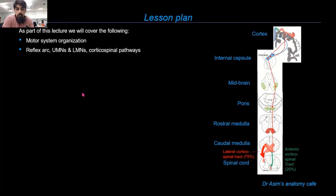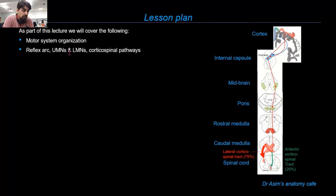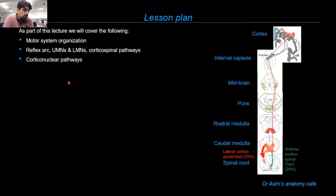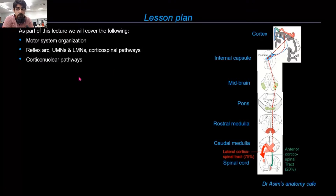We'll talk about the various components of the motor system — the reflex arc, the differences between upper and lower motor neurons, and we'll try to identify them in our motor system organization. We'll discuss in detail the descending spinal pathways, especially the corticospinal pathway. We'll also mention the corticonuclear pathways within the larger picture, though we'll discuss those in a separate lecture on cranial nerves.